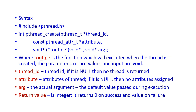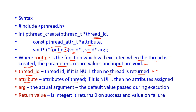In the pthread_create syntax, the routine is a function that executes when the thread is created. Its return value and input are both void. The thread_id assigns a unique ID to the thread; if null, no thread ID is returned. Attributes of the thread are assigned in the attribute parameter; if null, no attributes are assigned. The arguments parameter holds the actual arguments passed during execution — whatever value is given here becomes the default value when the thread executes.